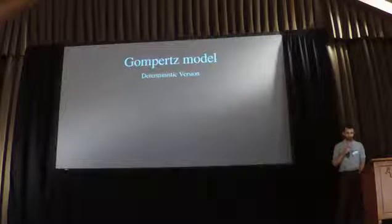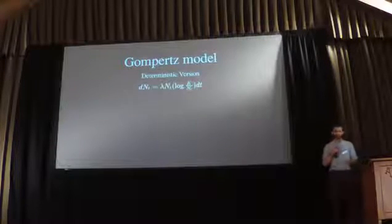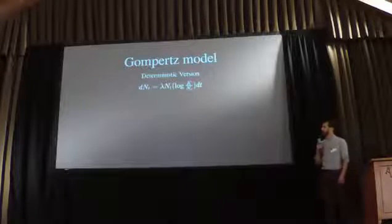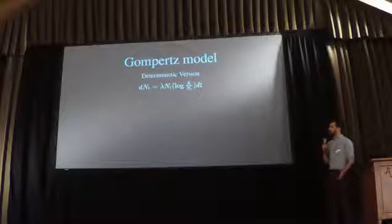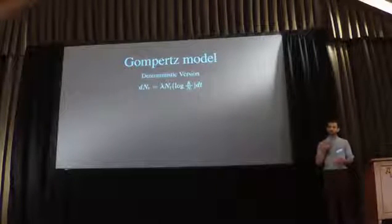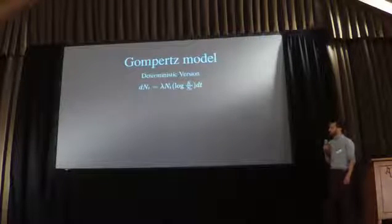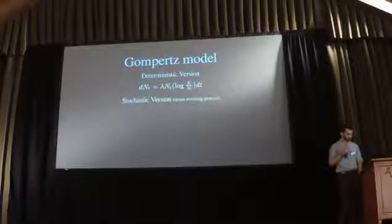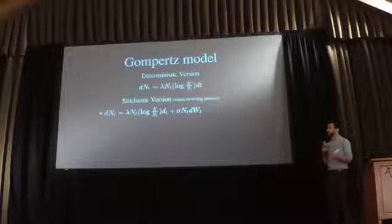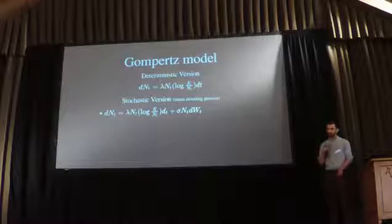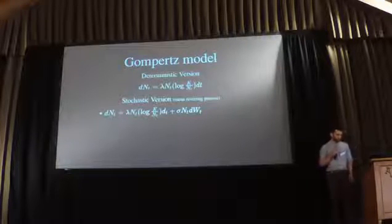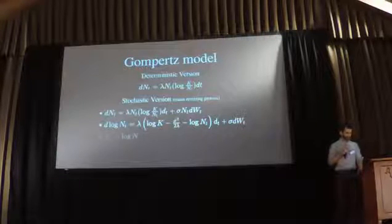The underlying model we're using is the Gompertz model of growth, which is similar to the logistic model of growth but the math works out a little bit better for us. This says that the rate of change of population N(t) is parametrized by rate coefficient lambda, is proportional to how many individuals are in the population allowing exponential growth, but limited by a carrying capacity. There's a stochastic version of this model which is a mean-reverting process — we have deterministic growth plus stochastic noise.